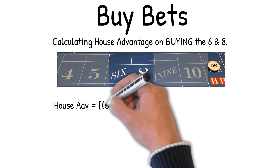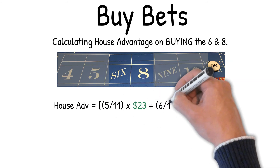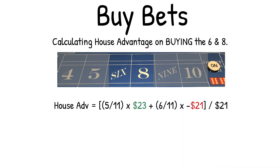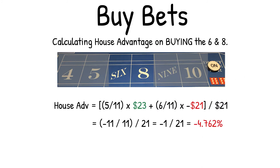Calculating house advantage on buying the six and eight. House advantage equals: 5/11 × $23 + 6/11 × (−$21), over $21. This equals (−11/11) / 21, which equals −1/21, which equals −4.762% house advantage.